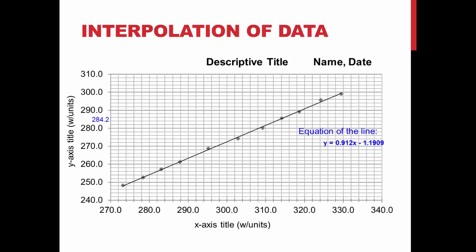Interpolation is estimating a value between known data points. For example, if you collected data that your dependent variable had a value of 284.2, you find that on your y-axis and draw a straight line using a ruler to your line of best fit. You then draw a straight line down toward the x-axis to interpolate the independent variable — in this case, 312.9.